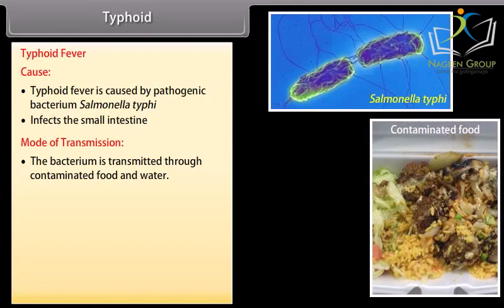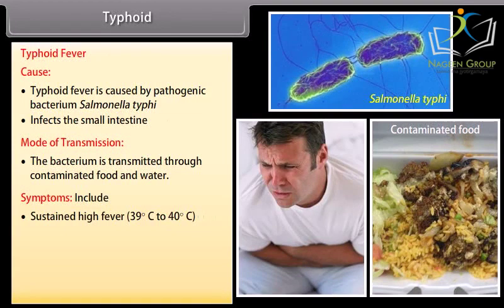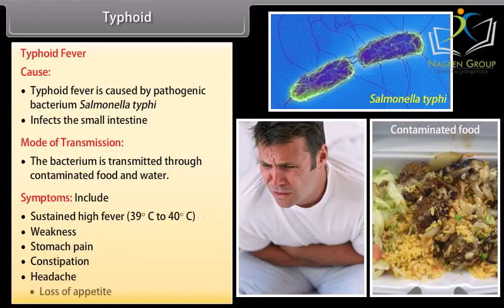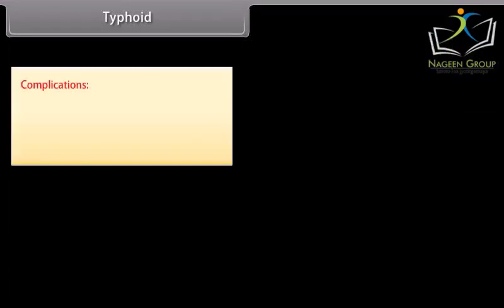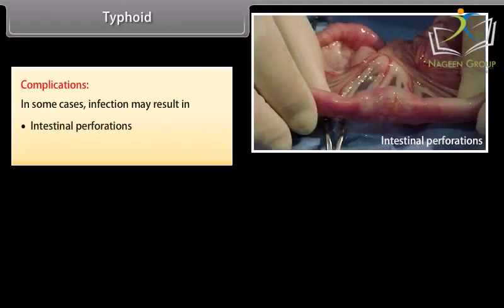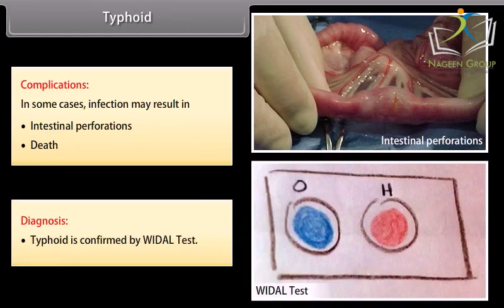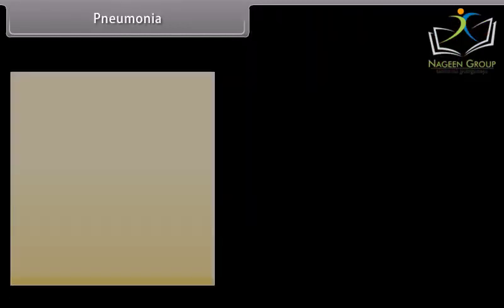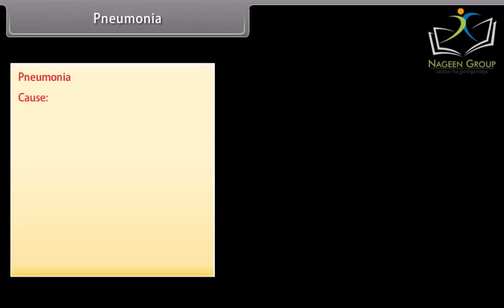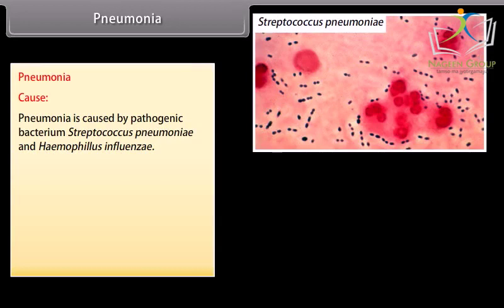Typhoid is transmitted through contaminated food and water. Symptoms include sustained high fever 39 to 40 degrees Celsius, weakness, stomach pain, constipation, headache, and loss of appetite. The disease can have complications and is caused by bacteria including Haemophilus influenzae.